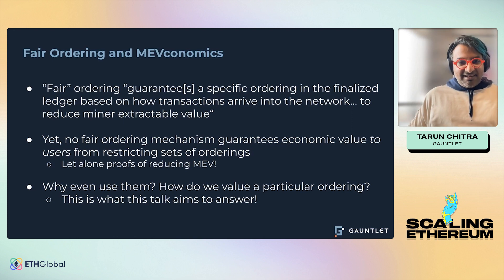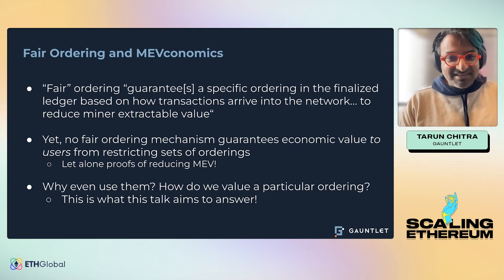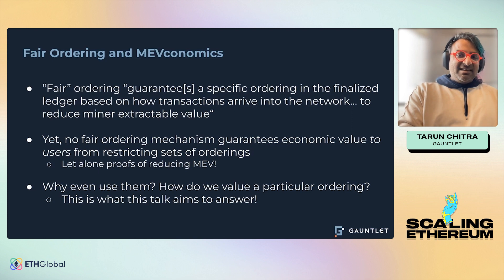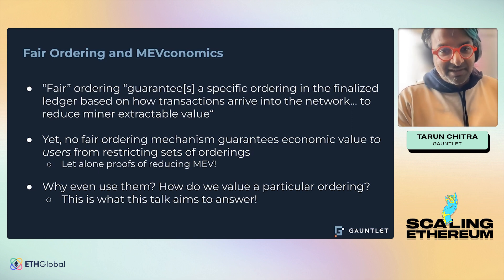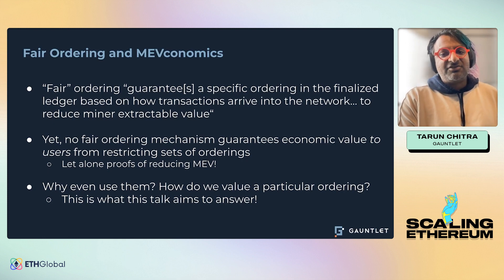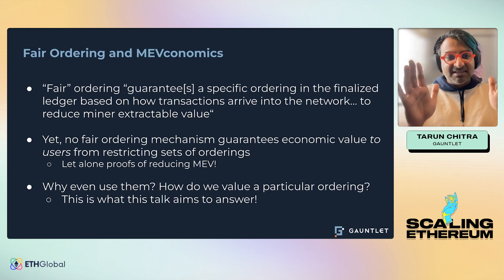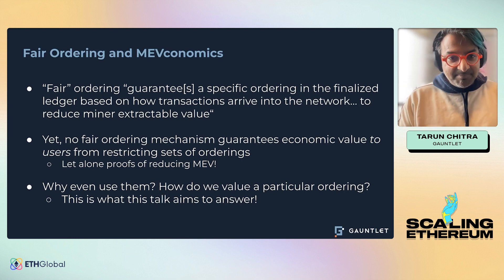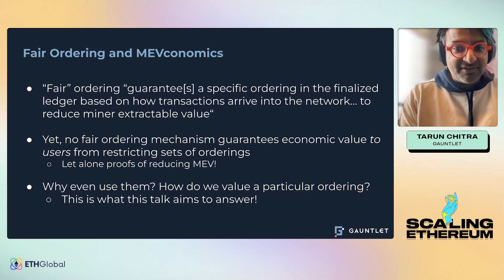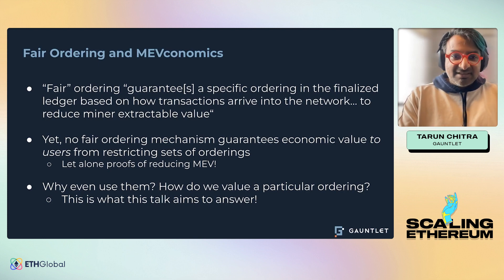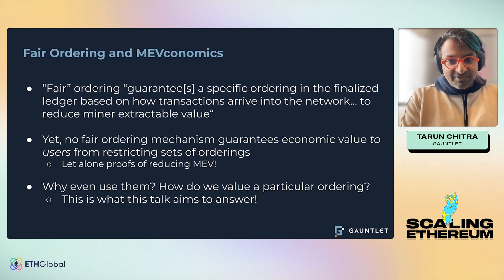Tina, as previous speakers have also mentioned, forced us to say the word "MEVconomics" somewhere. In my case, I kind of wrote a slide. The idea is — and this is a quote from one of the papers on fair ordering — fair ordering guarantees specific ordering in a finalized ledger on how transactions arrive to the network to reduce miner extractable value. Yet virtually all fair ordering mechanisms say nothing about the economics of what they do. They guarantee that some subsets of orderings will be respected, but they never tell you the cost of that or whether certain payoff functions change. So one question is: if we're putting all this extra work on top of validators, what's the real economic value of it? Is it harmful? That's the main thing we'll be covering.